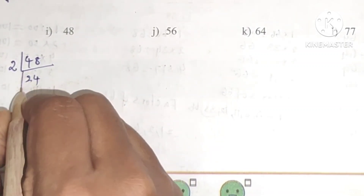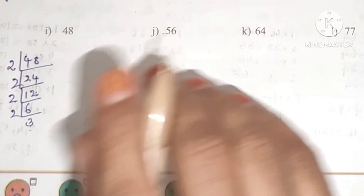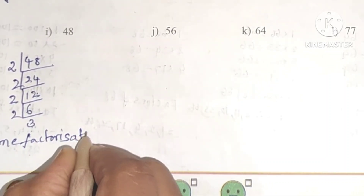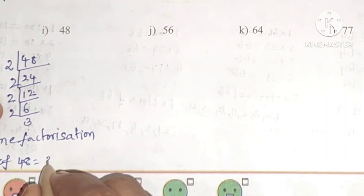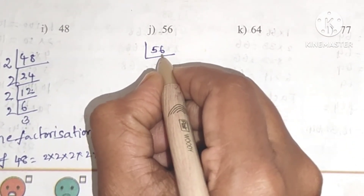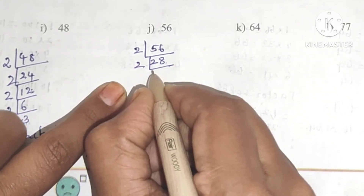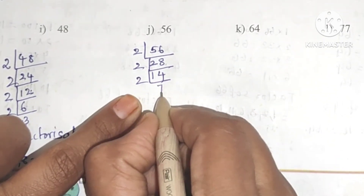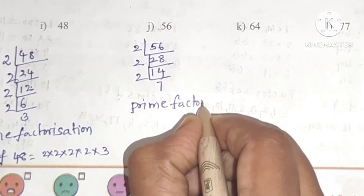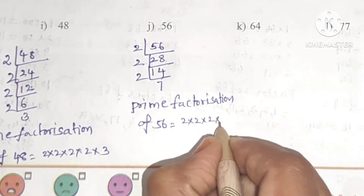Next, 48. Units place 8 is divisible by 2. Dividing repeatedly: 2 twenty-fours, 2 twelves, 2 sixes, 2 threes. Since 3 is a prime number, we stop. Prime factorization of 48 is 2 into 2 into 2 into 2 into 3.